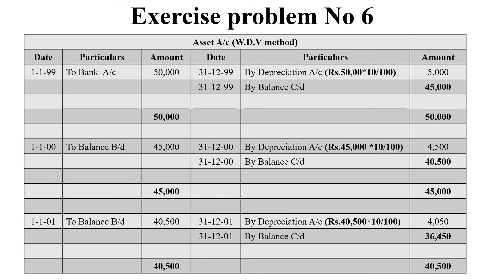That is the value of the asset as on 31st December 2000 or 1st January 2001. The balance brought down to the next year, 1st January 2001, is 40,500. As on 31st December 2001, the depreciation value is 4,050 — that is 40,500 into 10 by 100. So the balancing figure is 36,450, which is the value of the asset as on 31st December 2001 or 1st January 2002. The grand total on both sides is 40,500.